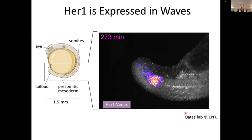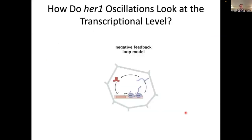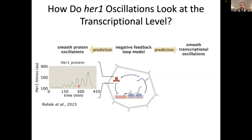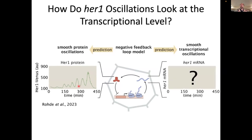The cool thing is that this negative feedback loop model predicts that the genes should oscillate in a smooth fashion, which is what people like Andy see — smooth oscillations as a function of time of HER1 in an individual cell. But this model also makes another prediction: that the transcription rate, the amount of RNA produced, will also oscillate in a smooth fashion. And yet, so far we have had no tools to measure how the RNA dynamics lead to these oscillatory protein dynamics.